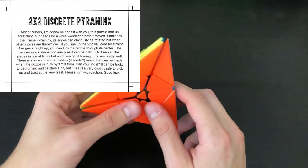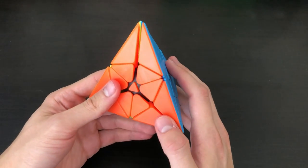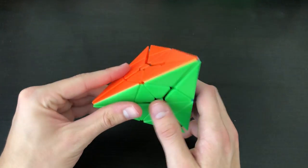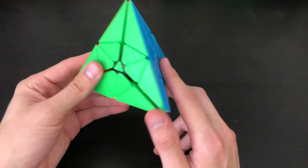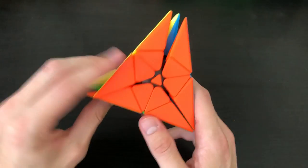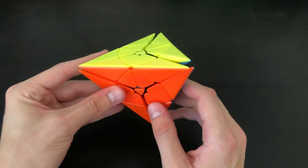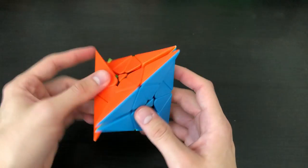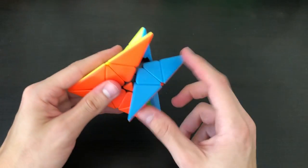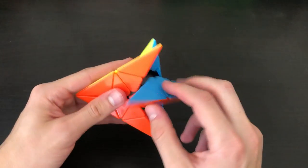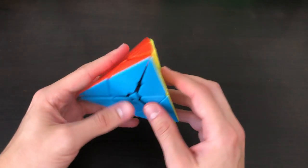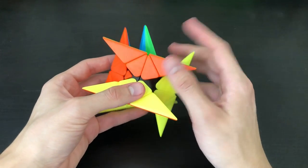All right, so here we have the 2x2 discrete pyraminx. I've never seen any puzzle like this whatsoever. This is definitely a new puzzle for me and I'm a little bit worried to turn it. Everything wants to turn right now, mostly these things right here. And so I'm curious to know what the actual discrete turn is that the card talks about.